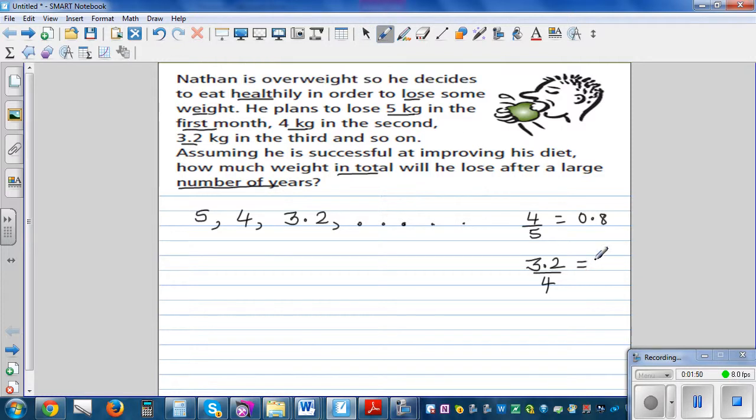That means if you multiply 4 by 0.8, this is 4 times 0.8 equals 3.2. So basically this is decreasing by 20%.